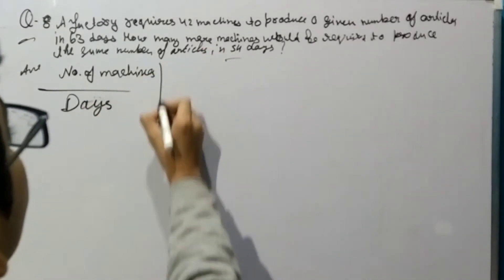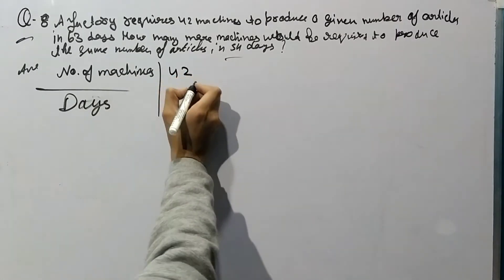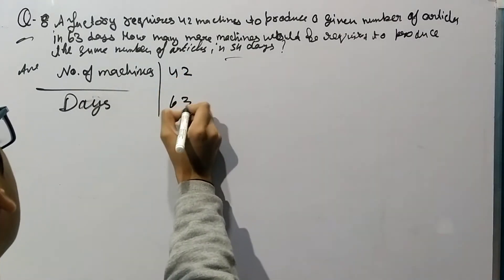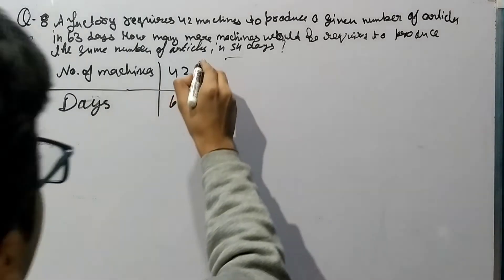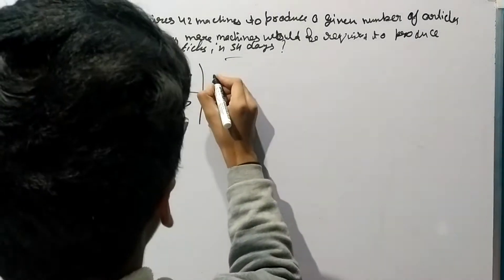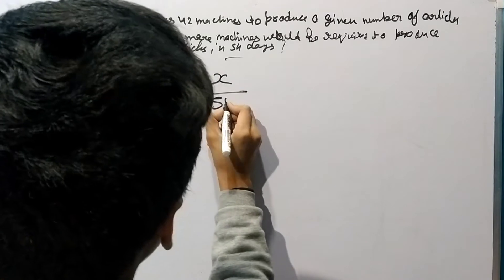So for 42 number of machines we got 63 days, and for x number of machines we got 54 days.